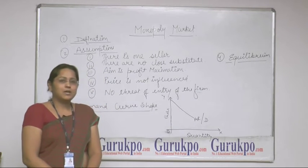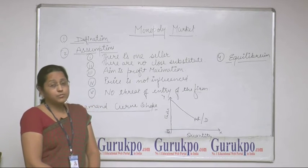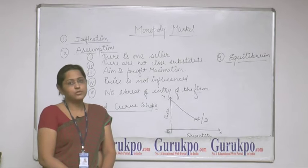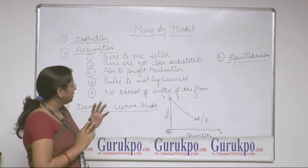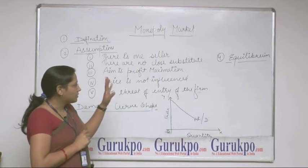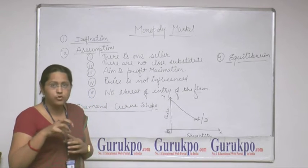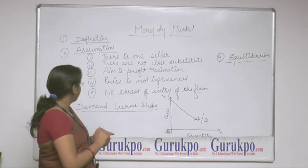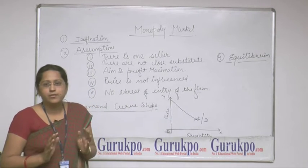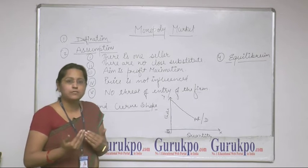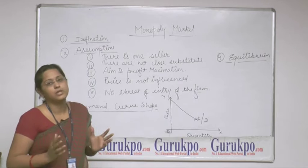Monopoly market is a market condition where there is only one seller, and this seller produces a homogeneous product. This product has no close substitute — there is no substitute available for that particular commodity which the monopolist produces. In a monopoly market situation, there is no free entry or exit of firms, meaning the monopoly firm is the only producer.